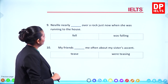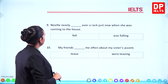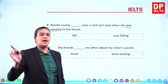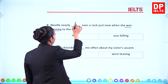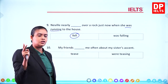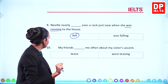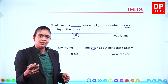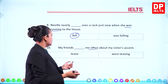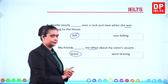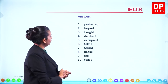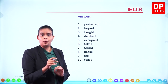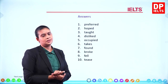Sentence nine: 'Neville nearly fell over a rock just now when she was running to the house.' Was running is past continuous (longer action), and fell is the simple past (shorter/interrupting action). Sentence ten: 'My friends teased me often about my sister's accent.' Often means routine, and it was in the past, so 'teased.' Check your answers: preferred, hoped, taught, disliked, occupied, takes, found, broke, fell, and teased.